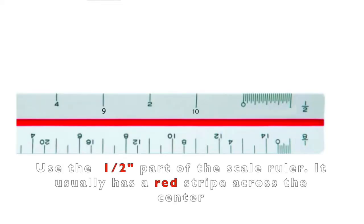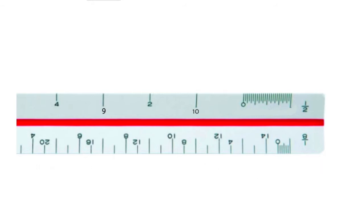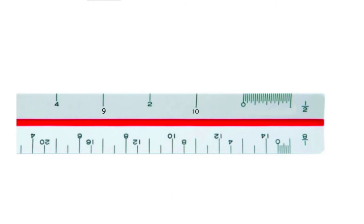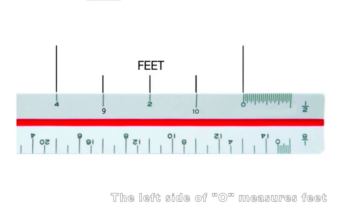This is the architect's scale ruler. It measures feet and inches. Each side has a different scale and it can be read from either side. In this class, we'll be dealing with half-inch, three-eighths of an inch, and quarter-inch. You can locate the half-inch part of the scale ruler. It usually has a red stripe across the center.